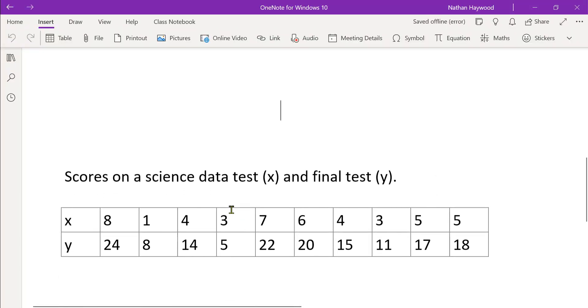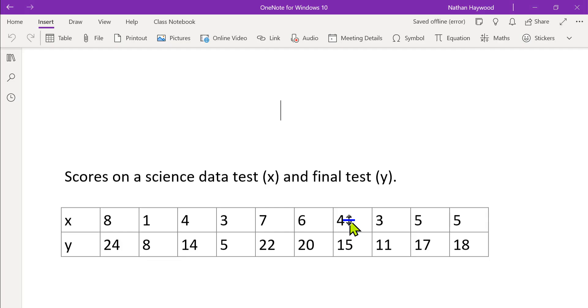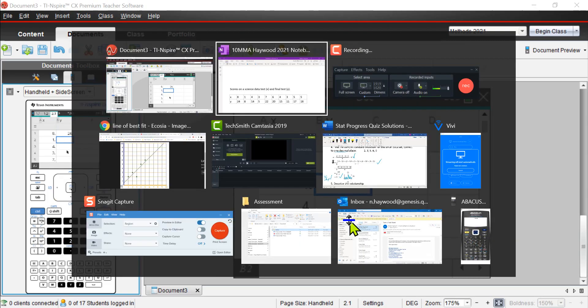So these are 10 students I surveyed. Their results for data tests in X and their results for the final test in the Y. So put the X's into the first column. Don't forget to label it. So X8, 8, 1, 4, put in your Y values as well that correspond to those X's.